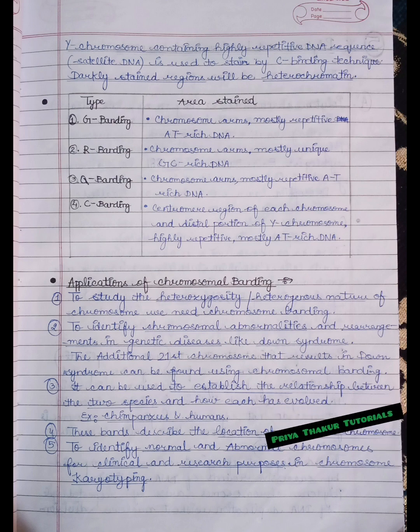Second is to identify chromosomal abnormalities and rearrangements in genetic diseases like Down syndrome. The additional 21st chromosome that results in Down syndrome can be found using chromosomal banding.